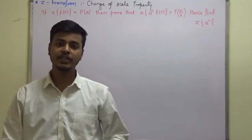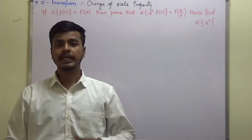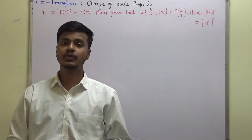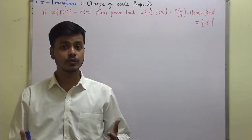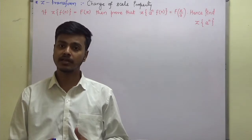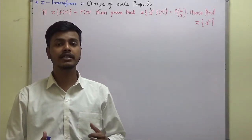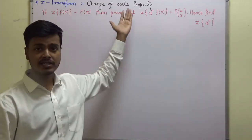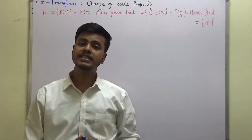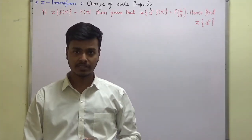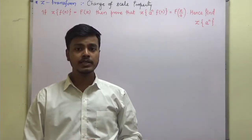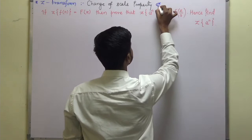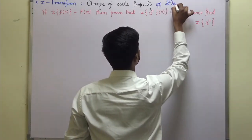Hello and welcome to this learning video. In the last learning video we have seen the linearity property of Z-transform and we have also seen one example. In this learning video we are going to talk about the second property of Z-transform, namely the change of scale property. This property is also known as the damping rule.